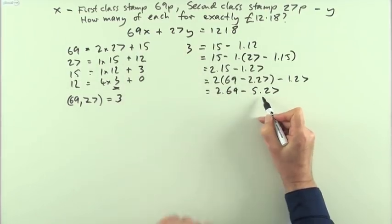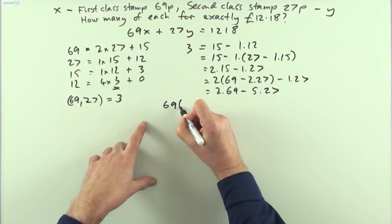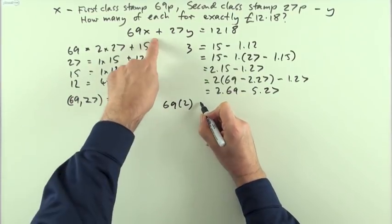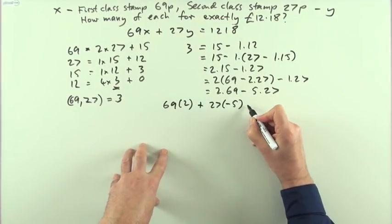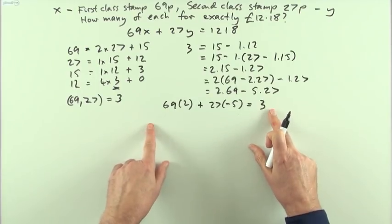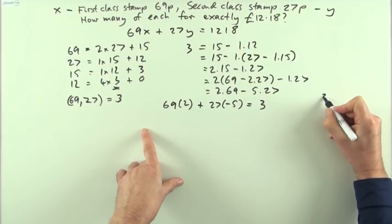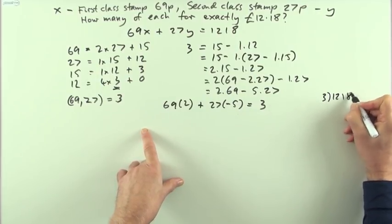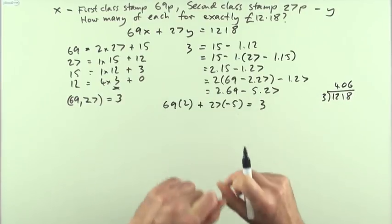That gives me 3. So I could write that part out, that's this equation here I've got. I've got 69 times 2, and it's a plus that I want, plus 27, so it'll be plus 27 times negative 5 should equal 3. But it's not 3 that I want, it's 1218. Now 1218 means I'm wanting 3 into that, 3 into 1218, which is going to be 406 times this.